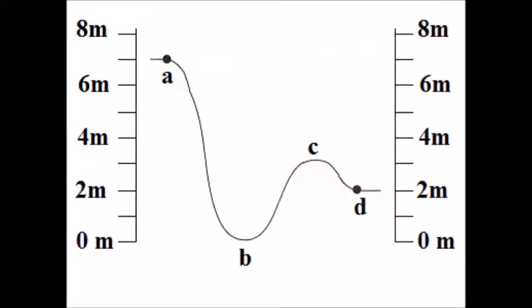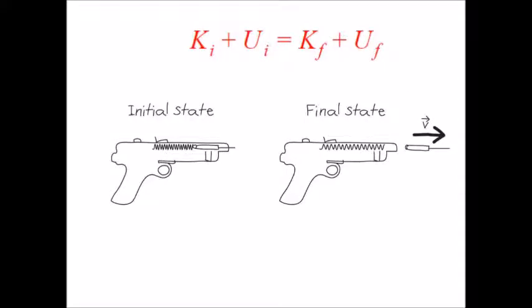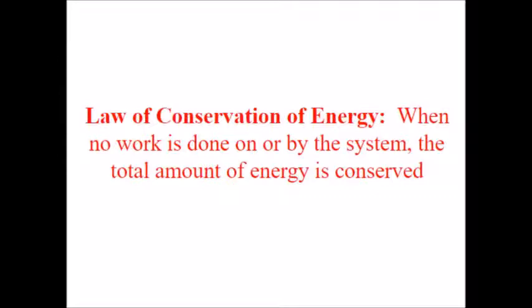Maybe this time you don't just release the ball at point A, but give it a push — so it starts with some kinetic energy and some gravitational potential energy. The conservation of energy says that no matter where you are, the sum of gravitational potential and kinetic energies will always be constant up and down the track. Or consider a spring gun: a different type of potential energy — spring potential energy. You cram a pellet in, it stores potential energy, then fires the pellet. When no external work is done on the system, the total amount of energy is conserved.